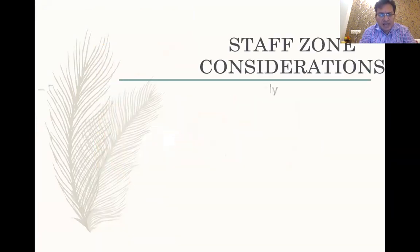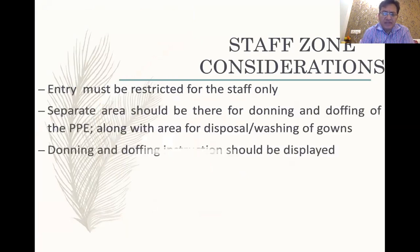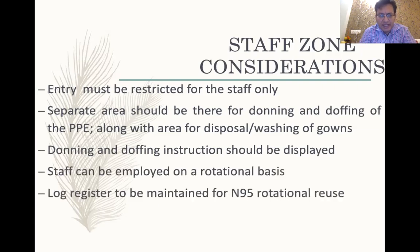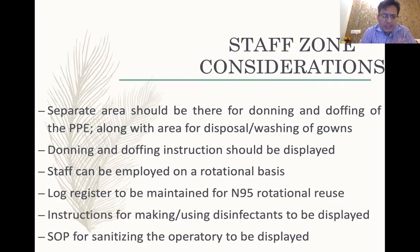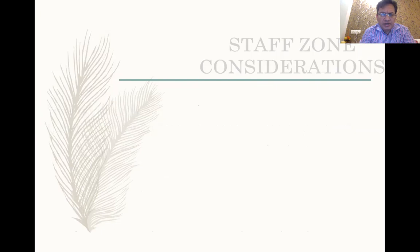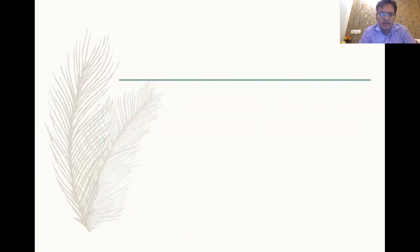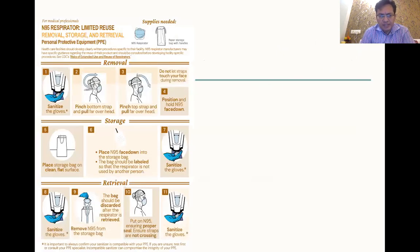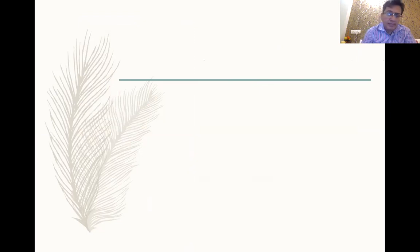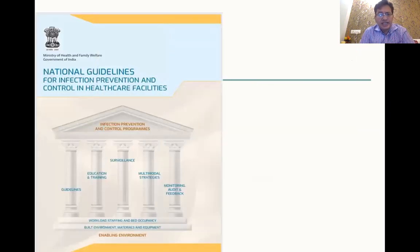In the staff zone, access should be limited to authorized personnel. A proper PPE donning and doffing area is essential, along with a log register for N95 rotational use. SOPs should be clearly demarcated in the operatory, and symbols should be posted as constant reminders for staff about N95 reuse steps. Multiple respirator options are now available, and national guidelines for infection control have recently been issued.